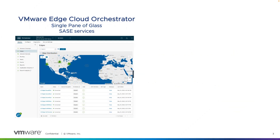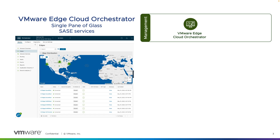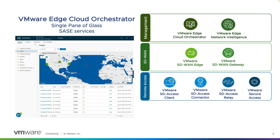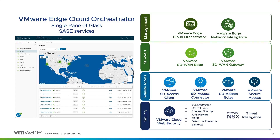VMware Edge Cloud Orchestrator is the central management tool for all the various components that make up the VMware SASE solution. This includes products such as VMware Edge Network Intelligence, which provides application and branch analytics. Networking services such as SD-WAN gateways and edges can be centrally managed, monitored, and troubleshot from this single pane of glass. Even remote access services such as VMware Secure Access and the new VMware SD Access Client, as well as security services such as VMware Cloud Web Security, are all integrated into VMware Edge Cloud Orchestrator.